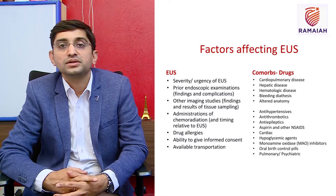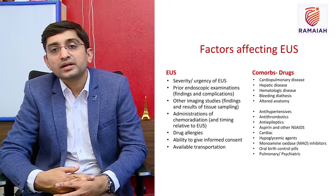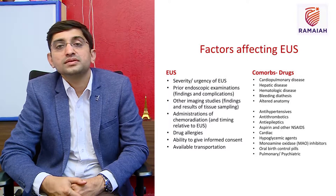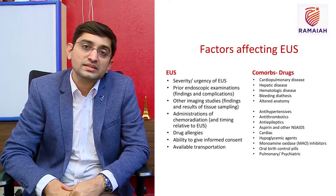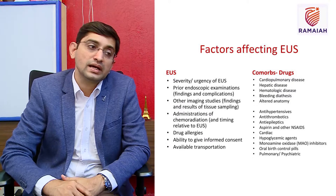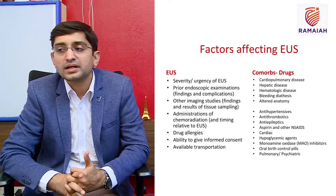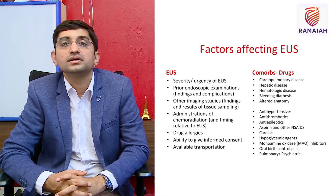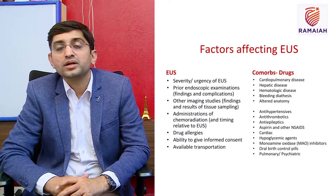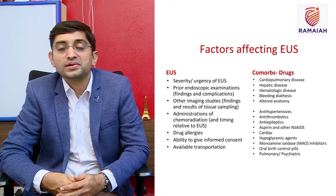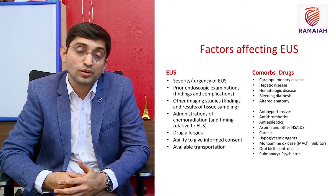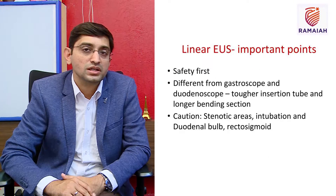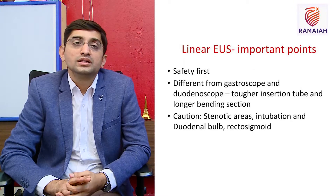Always take informed consent, as there can be bleeding or perforation. Drug allergies and comorbidities must be considered — cardiopulmonary, respiratory, liver disease, hematological disease, bleeding disorders, and surgically altered anatomy. Check the patient's medication list: beta blockers, anti-epileptics, anti-thrombotics, warfarin, anti-platelets, and hypoglycemic drugs. Patient safety comes first before introducing the linear echo endoscope.